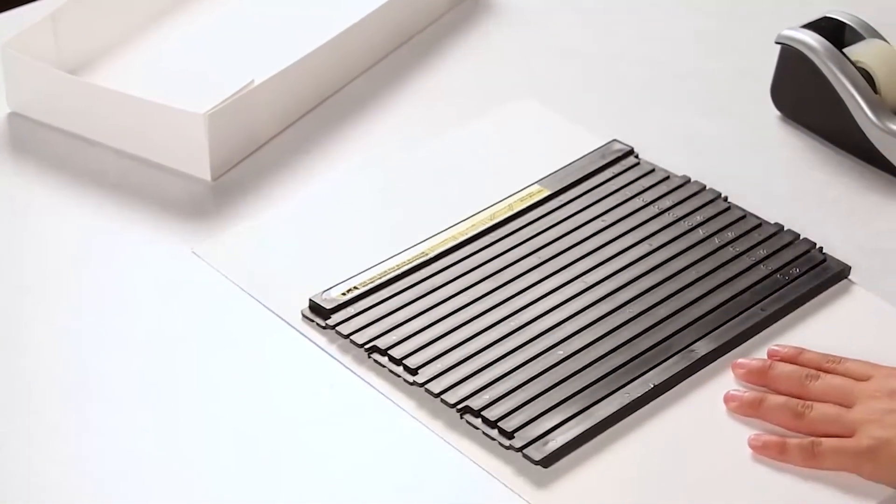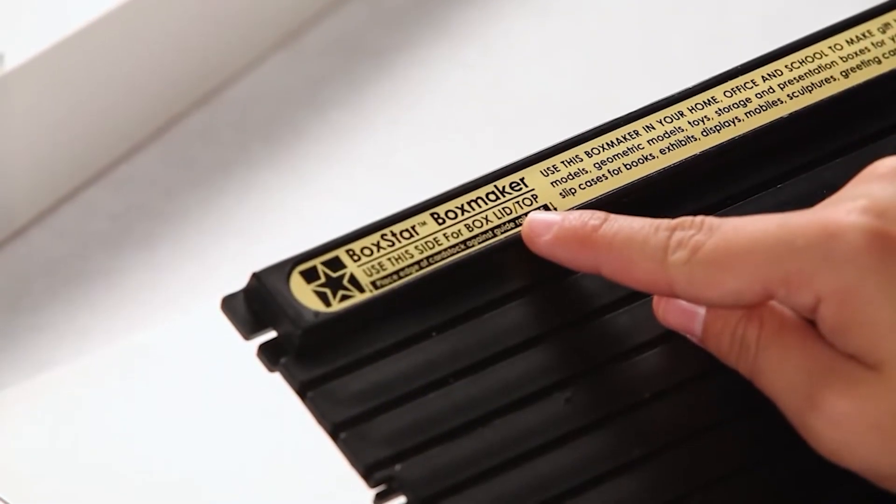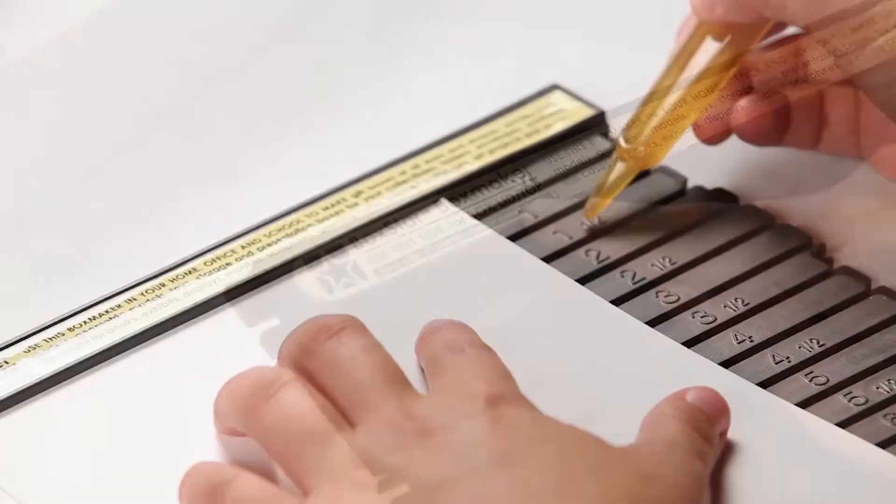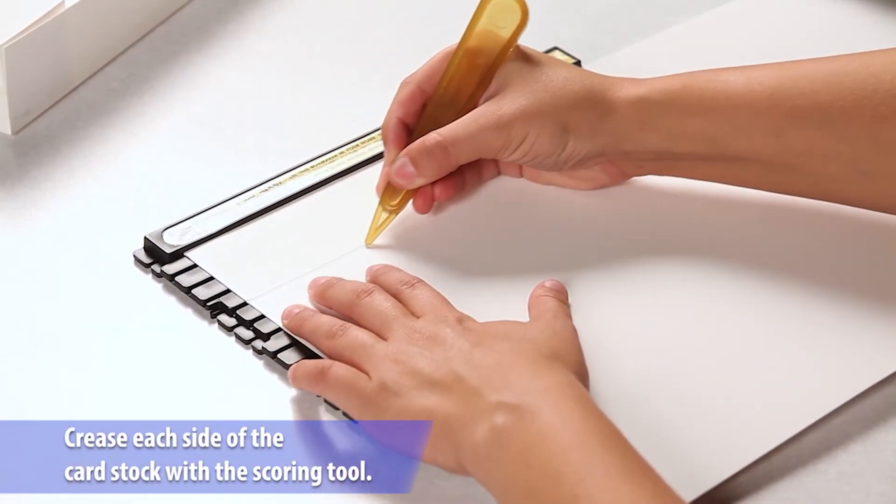For the top of the box, flip the box maker over and use the side labeled lid/top and another piece of cardstock. Crease each side of the cardstock with the scoring tool along the two inch groove.